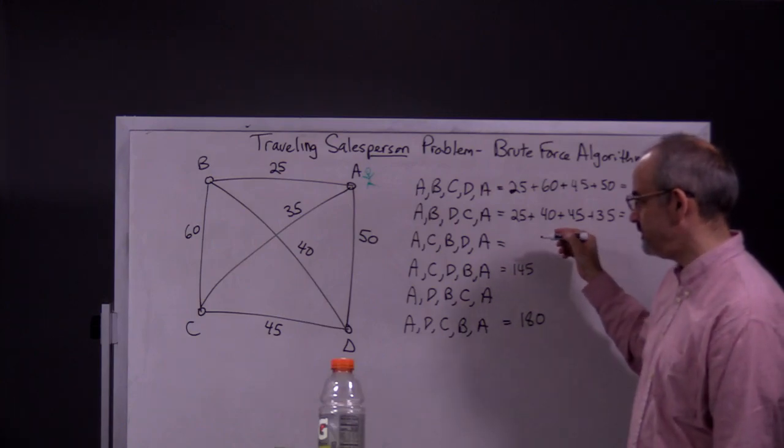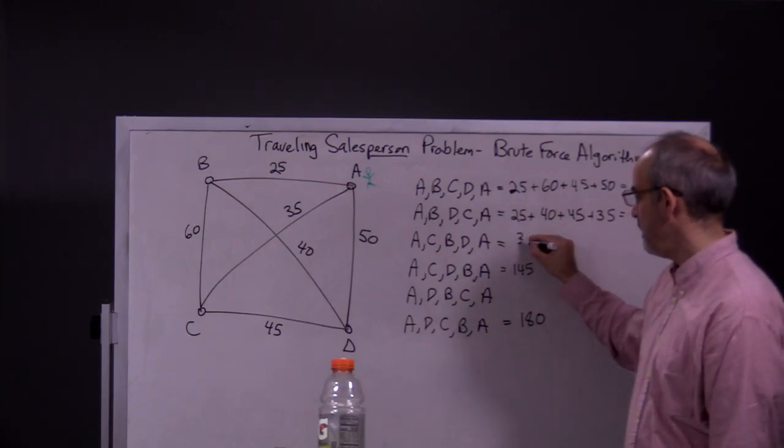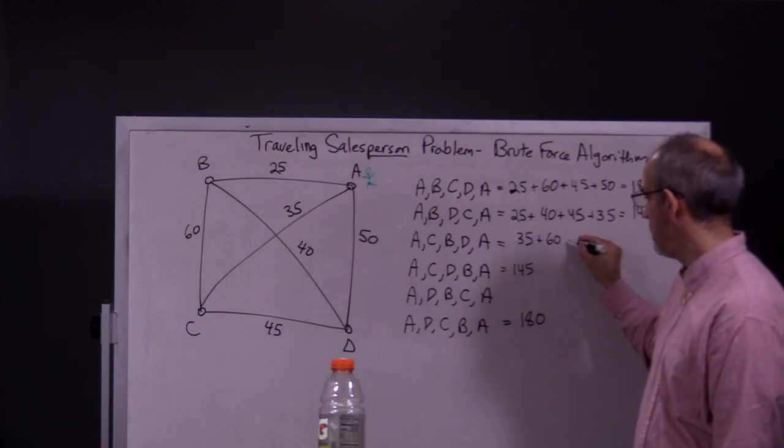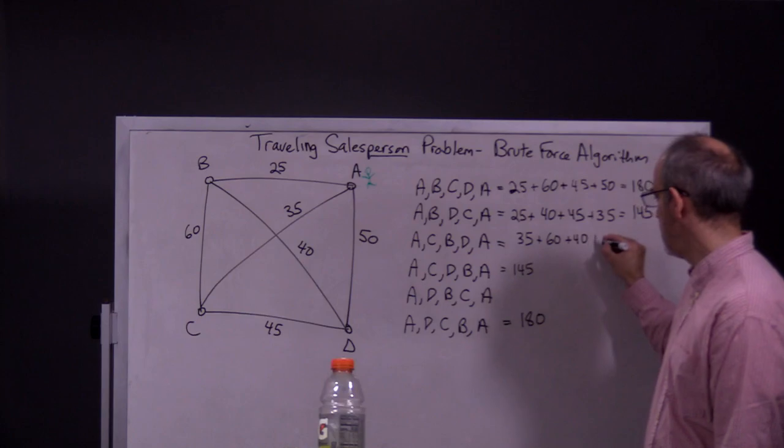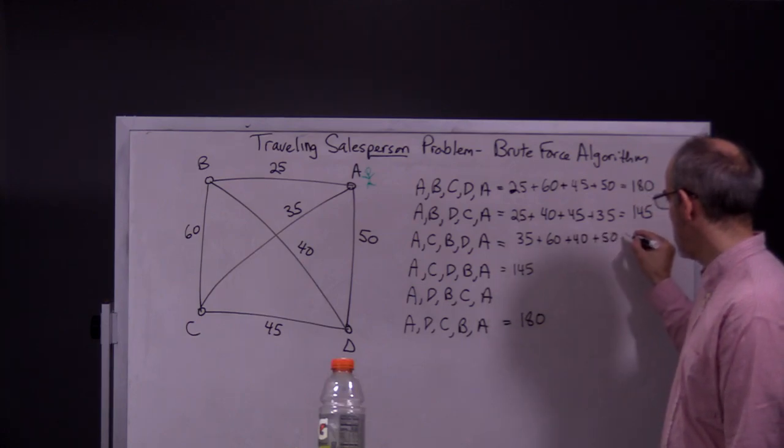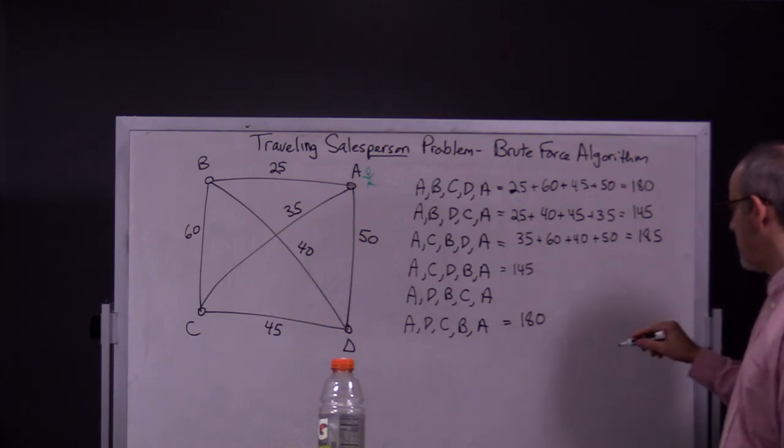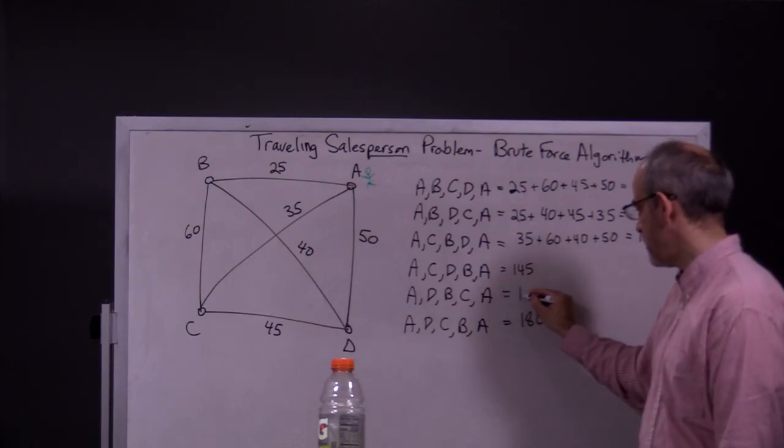Let's look at this one. A to C, 35. C to B, 60. B to D, 40. D to A, 50. So we have 95, 135, 185. That's the worst one.